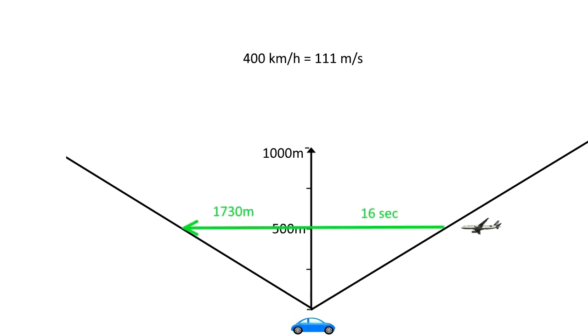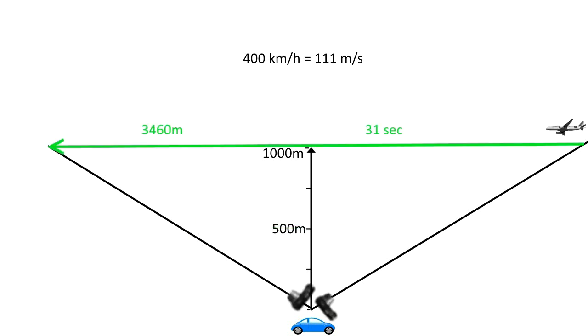If the plane is 500 meters, or 1,500 feet away, you can watch it for 1,730 meters, or 16 seconds. That's within one mile. But if the plane is 1 kilometer, or 3,000 feet away, you can watch it for 3.5 kilometers, that is 2 miles, and you have 31 seconds, or half a minute, time to shoot a video.